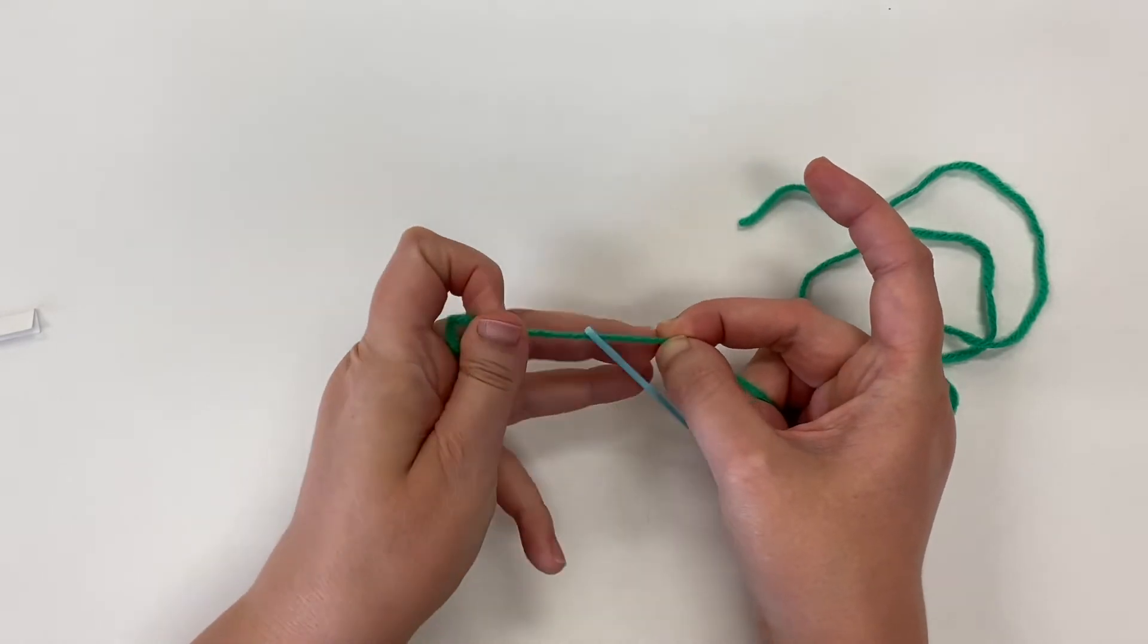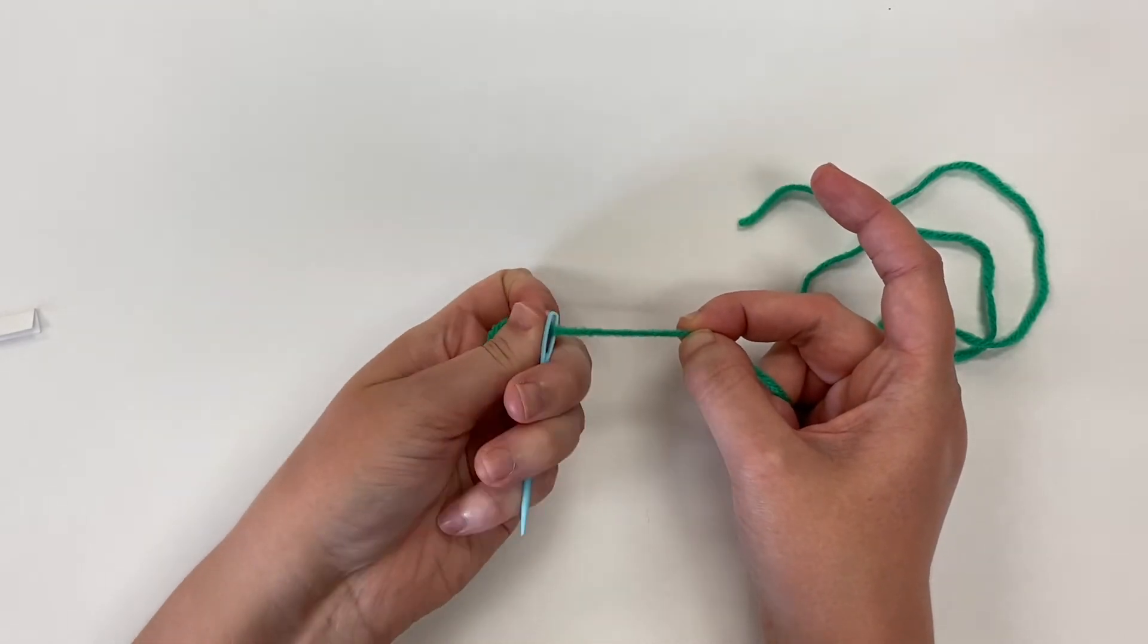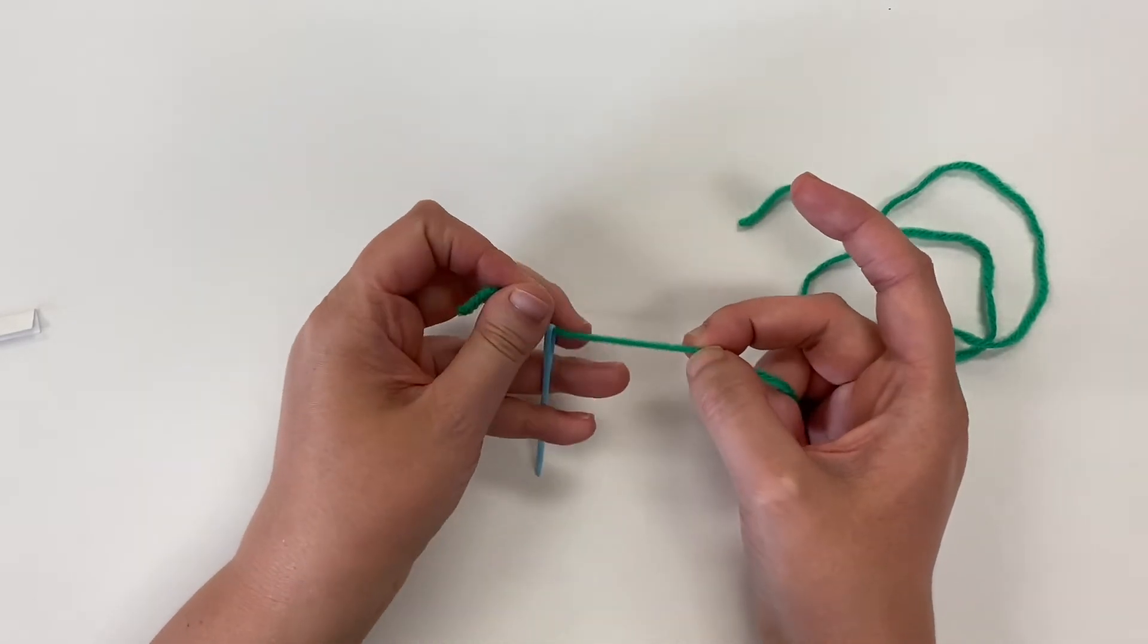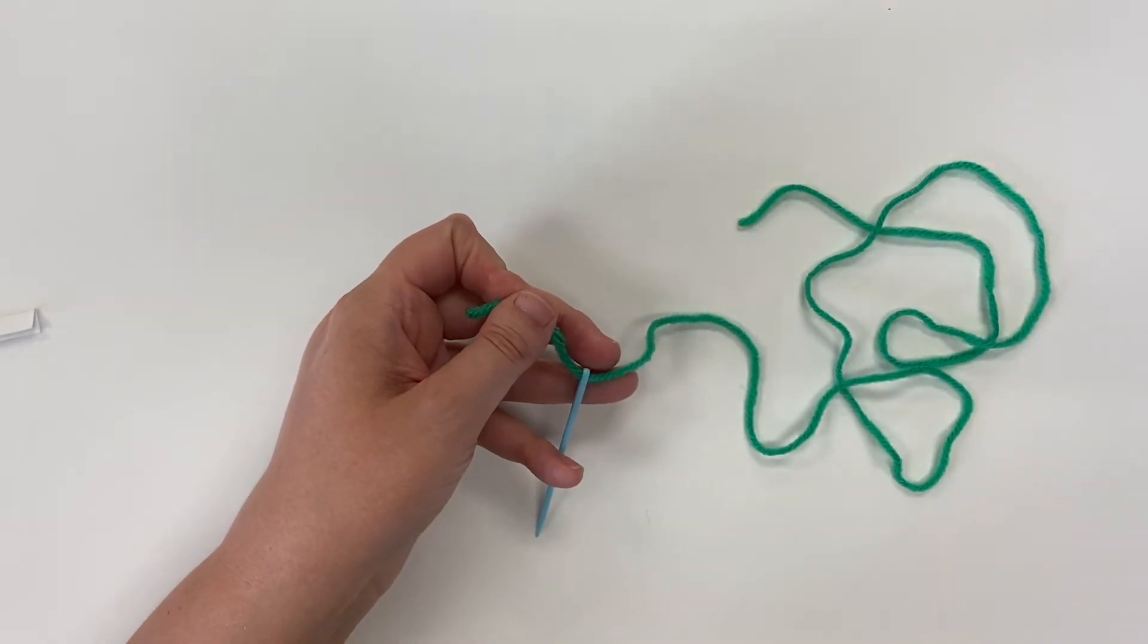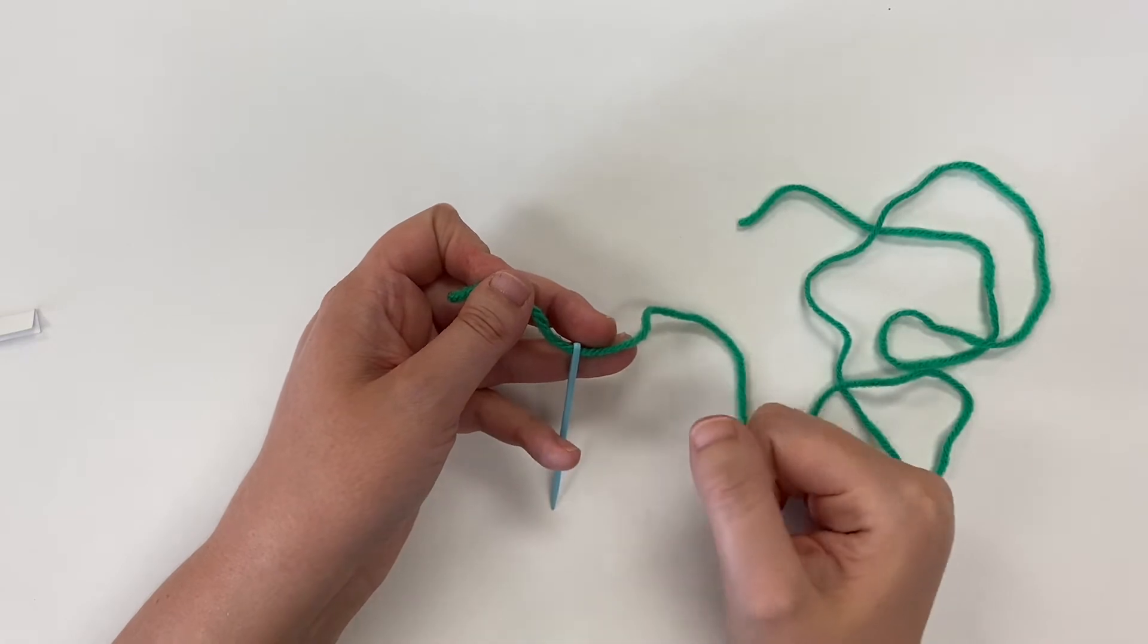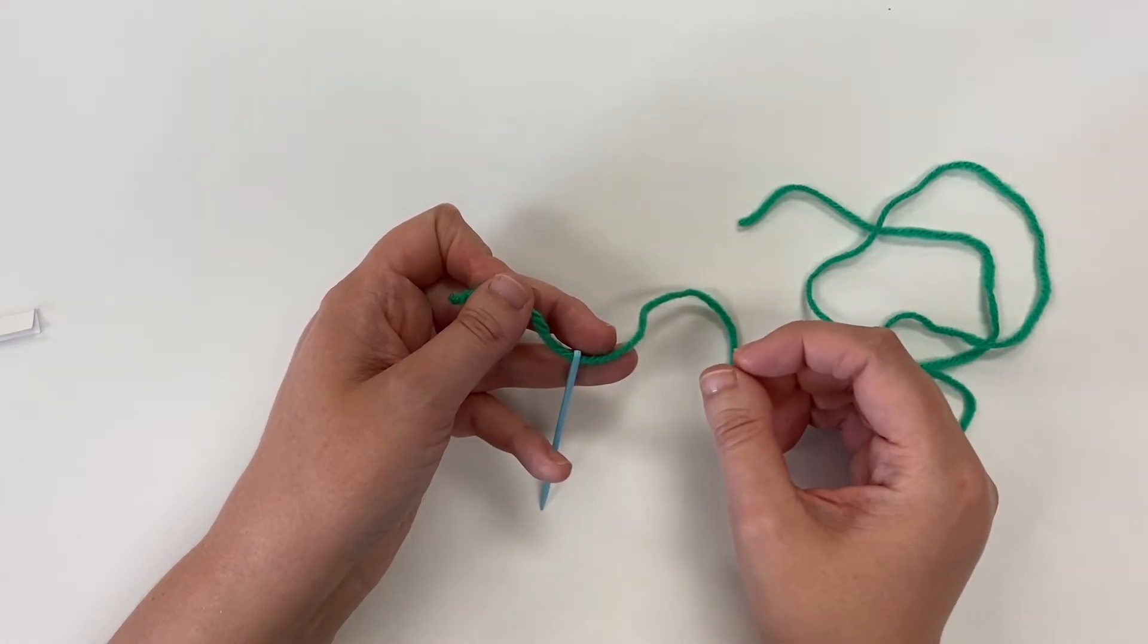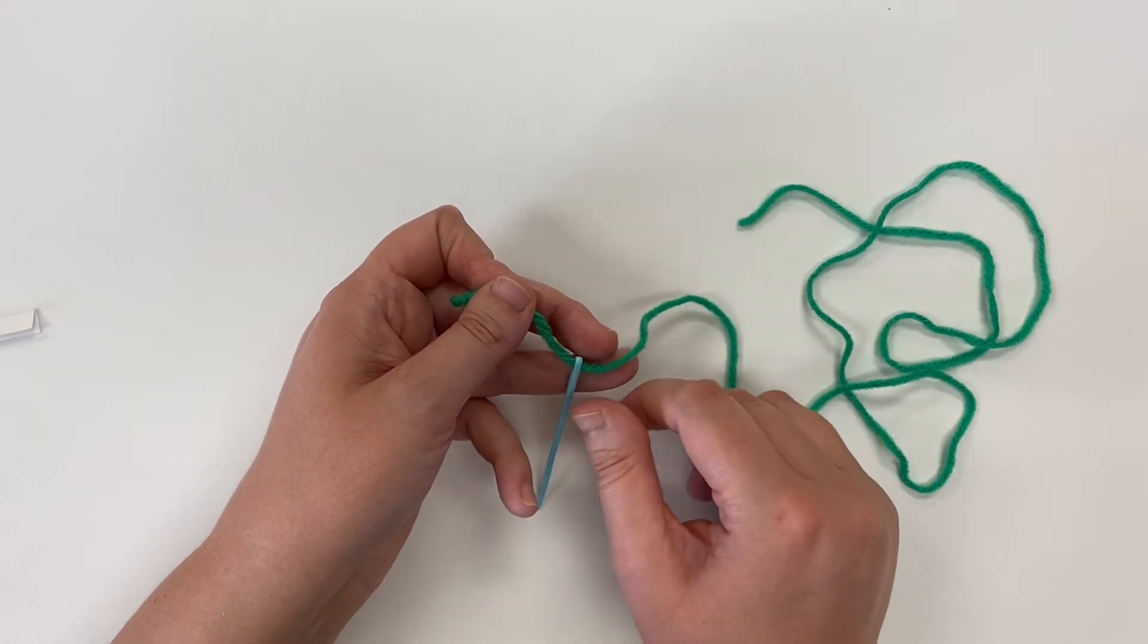So now my yarn is inside of my needle and I am ready to tie a knot. You want to tie a knot to hold your needle to the yarn so that when you're making your necklace you don't have to worry about your needle falling off.